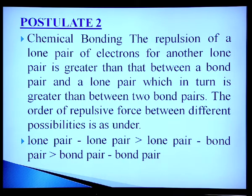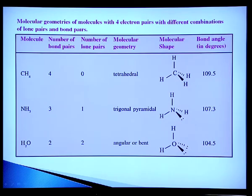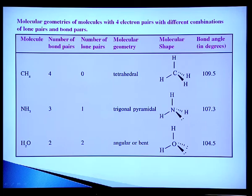The second postulate of VSEPR theory states that the repulsion of a lone pair of electrons for another lone pair is greater than that between a bond pair and a lone pair, which in turn is greater than between two bond pairs. The order of repulsive forces is: lone pair–lone pair > lone pair–bond pair > bond pair–bond pair. Taking the example of methane, ammonia, and water: all three contain four electron pairs around their central atom. In methane, there are four bond pairs. In ammonia, there are three bond pairs and one lone pair. In water, there are two lone pairs and two bond pairs.